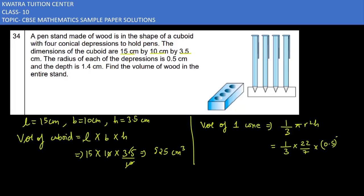Square and height is 1.4 cm. So 22 over 7 times 0.5 times 0.5 times 1.4, divided by 3. When you solve this, you will get 0.366 cm³. So this is one cone.